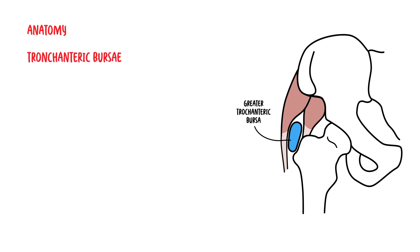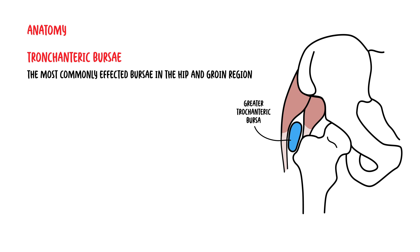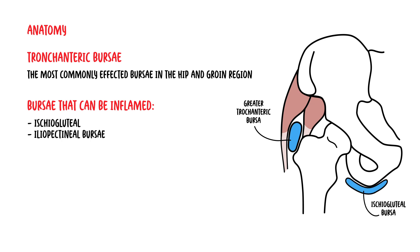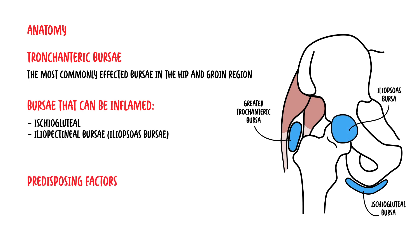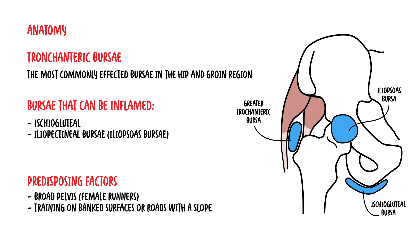The trochanteric bursa is the most commonly affected bursa in the hip and groin region. However, other bursae that can be inflamed also include the ischiogluteal and the iliopectineal bursa, also known as the iliopsoas bursa. Predisposing factors for trochanteric bursitis include broad pelvis, specifically female runners, training on banked surfaces or roads with a slope, and a recent increase in mileage, duration, or intensity of training.